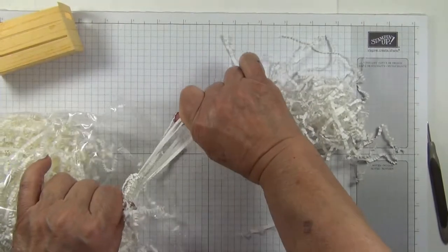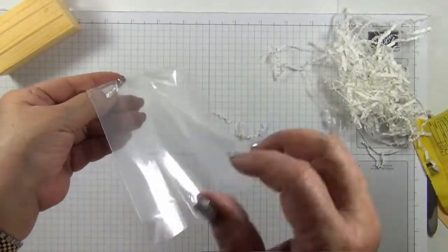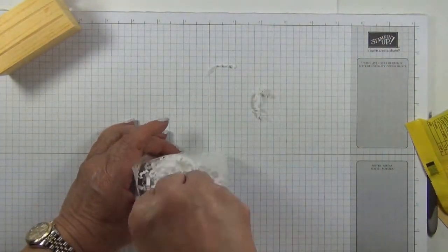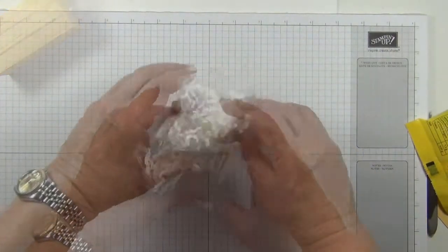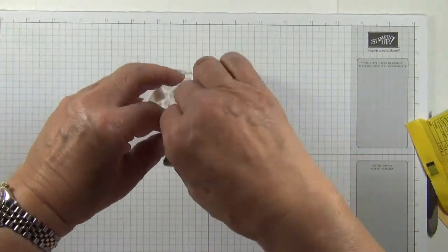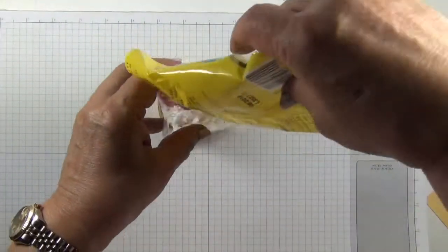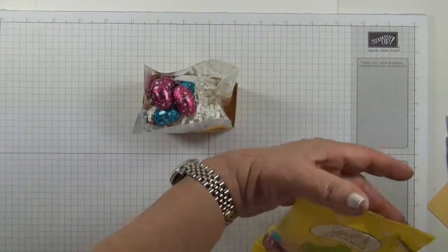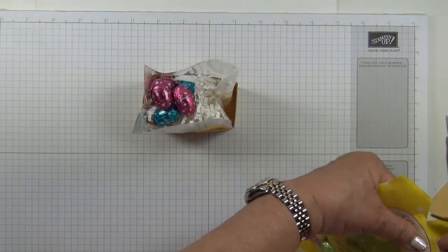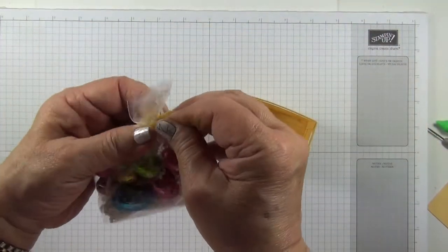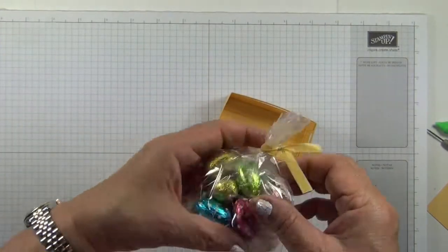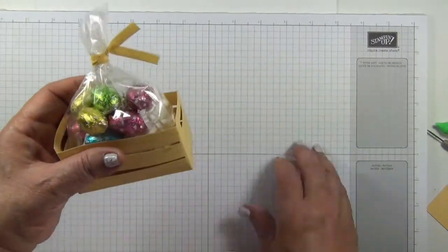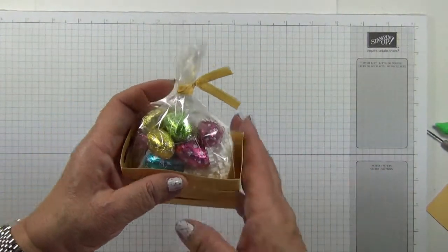A handful of shreddies. Take my cello bag and just pinch the bottom, pop my shreddies in. I'm going to tie it together. I'll pop back for a Tip Tuesday in the future and show you how to make your own ties.